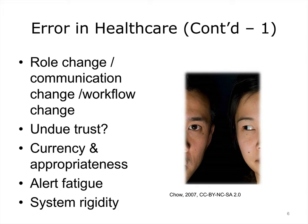Errors in health care come from problems with currency and appropriateness. A medication considered safe today can suddenly be pulled from the market, requiring changes to all systems incorporating that medication quickly. If a decision rule exists suggesting use of the now-no-longer-safe medication, what is your plan for getting that change instituted in all systems that contain that rule? Many systems in use today are distributed and don't talk to one another. Keeping the rules, the data, and the algorithms all current is a huge problem in health IT. If not, error propagates extremely fast with just the touch of a button.